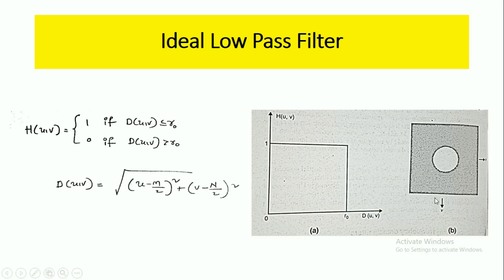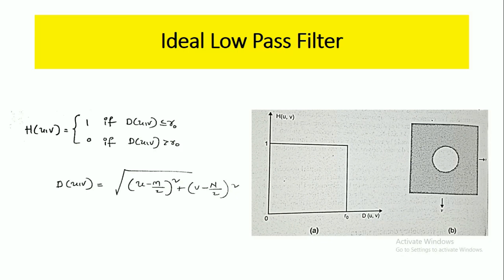This is the representation of the ideal low pass filter in the form of an image. The transfer function of this ideal low pass filter is given as H(u, v) = 1 if D(u, v) is less than or equal to r-naught — meaning the frequency component distance is less than the cutoff frequency r-naught — and it is zero if D(u, v) is greater than r-naught.